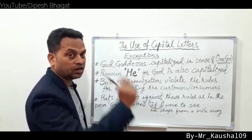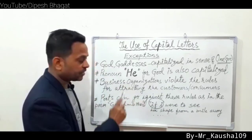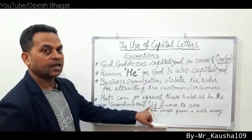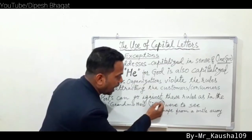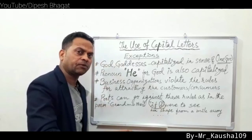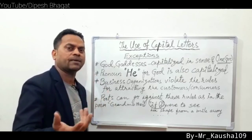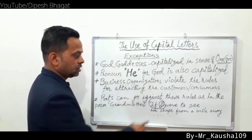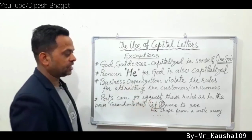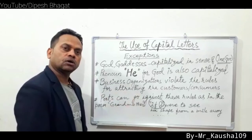The poem starts with a small letter — we know the rule that a sentence starts with a capital letter, but this poem starts with a small letter. The opening line reads: 'if i wait to see her shape from a mile away.' Even pronoun 'I' is written in small, violating the rule that pronoun 'I' must be capitalized everywhere, at the beginning or in the middle.